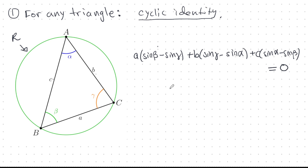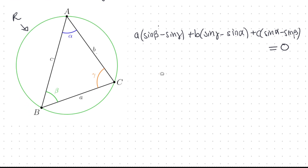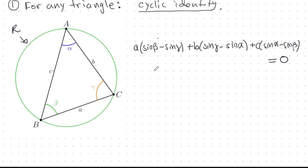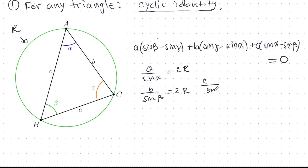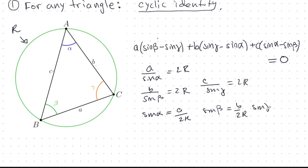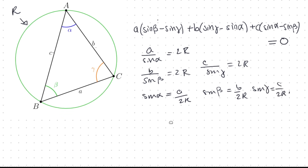How do we prove this? We use the extended sine law. It tells us a/sin α = 2R, b/sin β = 2R, and c/sin γ = 2R. This gives us expressions for the sines: sin α = a/2R, sin β = b/2R, and sin γ = c/2R. Now let's plug all of this into our identity and see what happens.